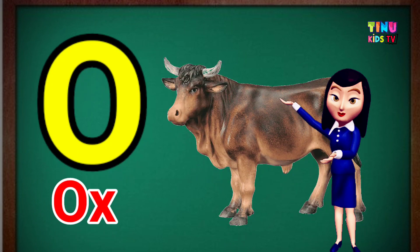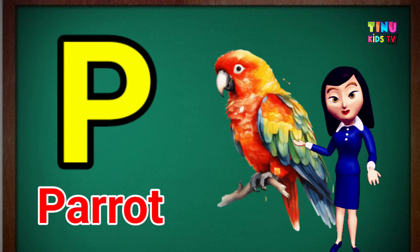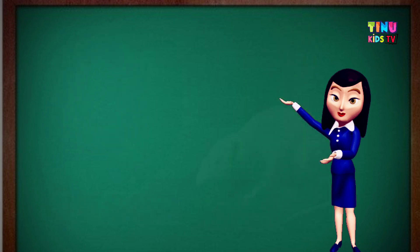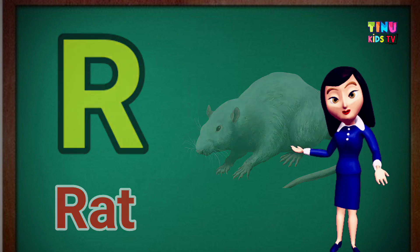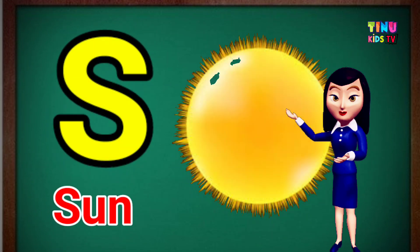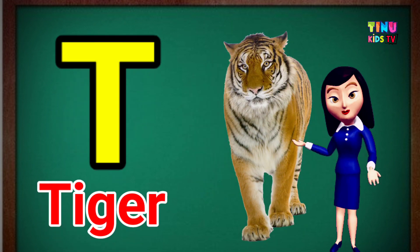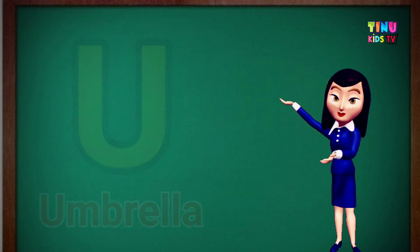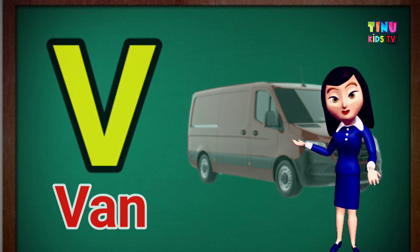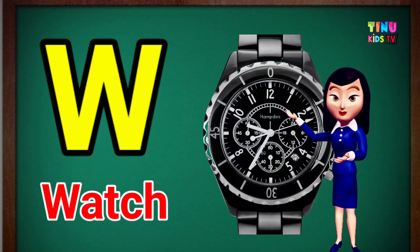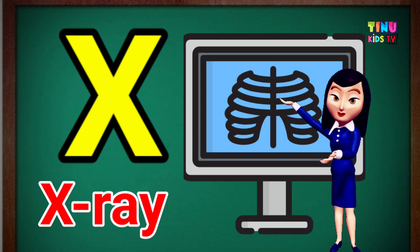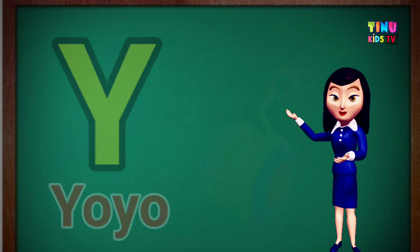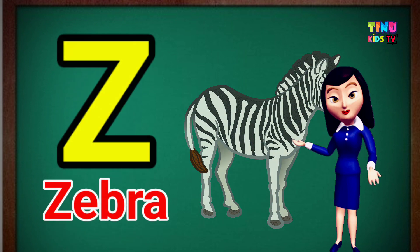O for Ox. P for Parrot. Q for Queen. R for Red. Y for Yo-Yo. Z for Zebra.